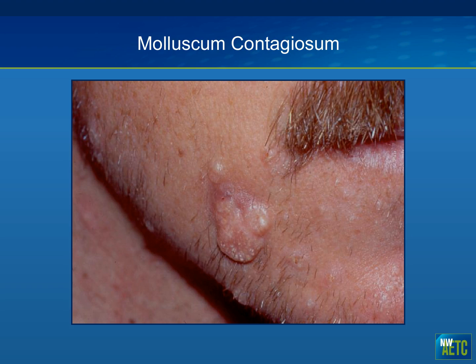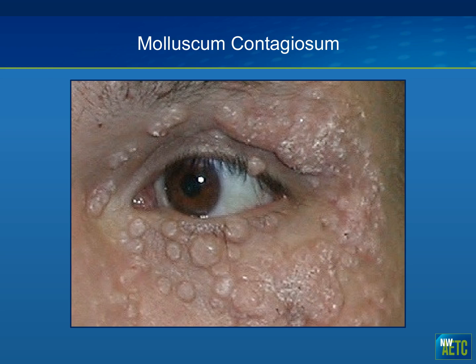Looking at the diagnosis, what this individual has is molluscum contagiosum. This is a very common problem in people with advanced HIV disease. As everyone knows, this is a very common problem in pediatric medicine, but in HIV it manifests very differently — these papular lesions that just don't get better. They're often located on the face and the genital tract. This representative image shows a giant molluscum.